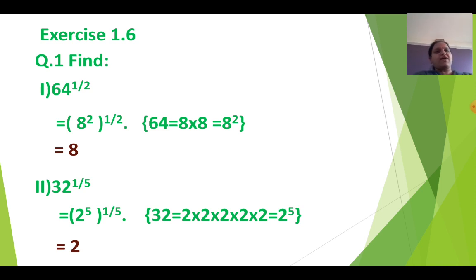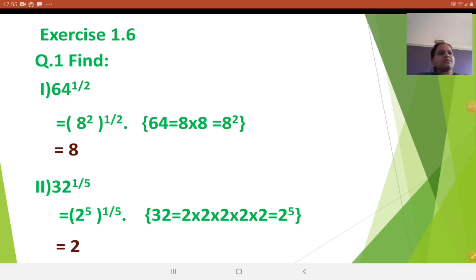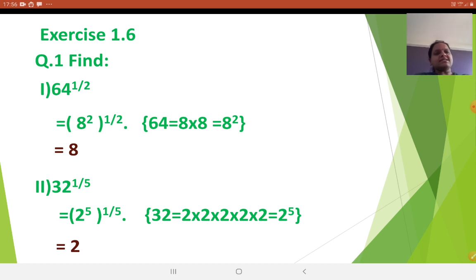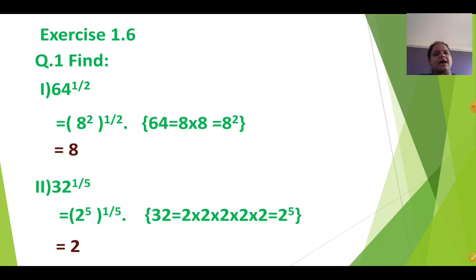See the second sum: 32 raised to 1 upon 5. The denominator is 5, so I am writing 32 as 2 raised to 5. The 5 and 5 will get cancelled and you will get the answer as 2. You can see 32 as 2 into 2 into 2 into 2 into 2, which is 2 raised to 5.